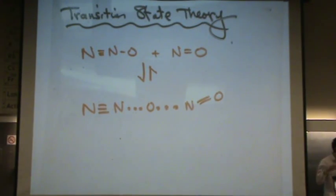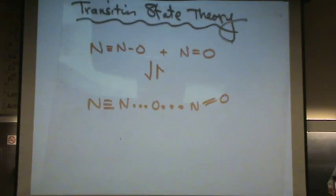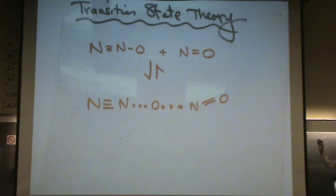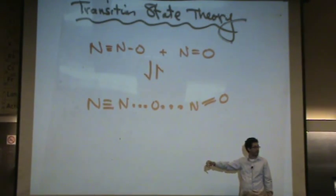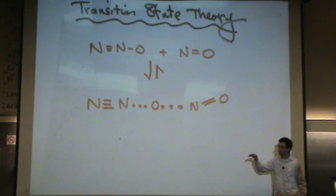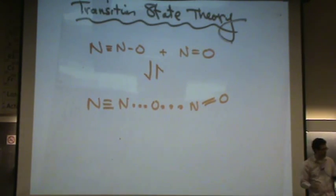And this is called the transition state. There are partial bonds here. These are partial bonds. Or some people call this an activated complex. And this is the transition state, the very highest energy point. This is where it can decide, do I feel like going backwards or do I feel like making the products? And here's the transition state where it's going to decide, do I want to make that transition or not?